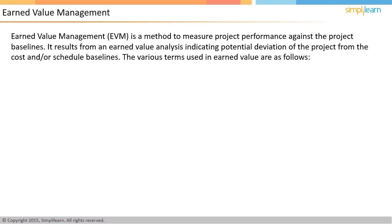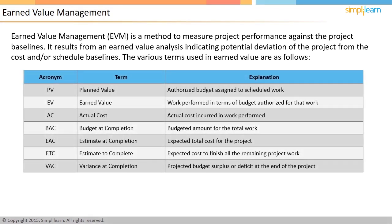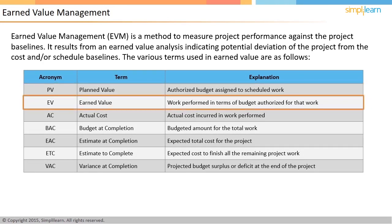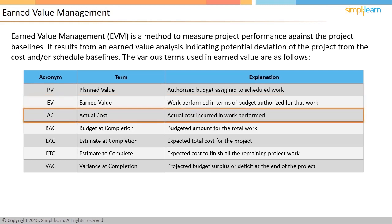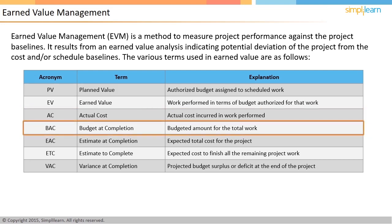The schedule baseline is the first approved project schedule along with approved changes. There are various terms used in earned value technique. Planned value is the authorized budget assigned to the scheduled work. Earned value is the work performed in terms of the budget authorized for that work. Actual cost is the cost incurred in the work performed.